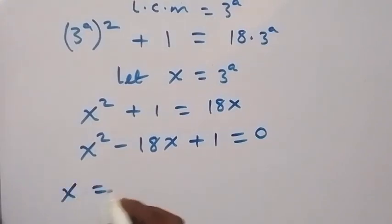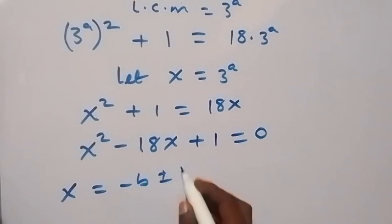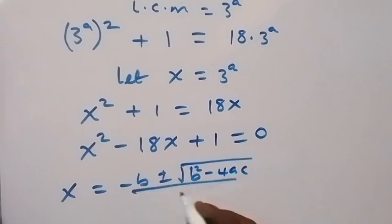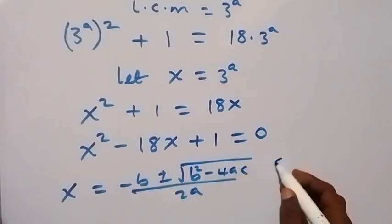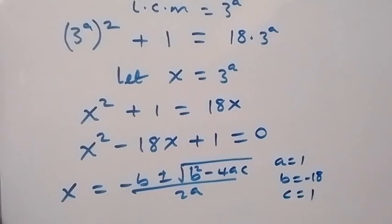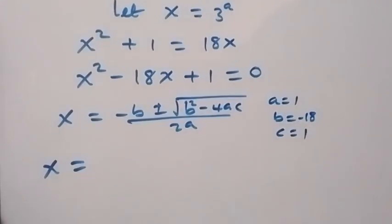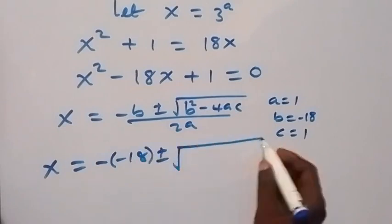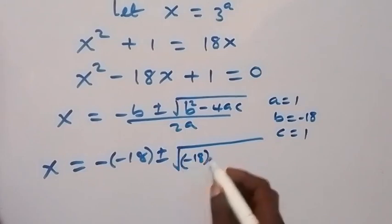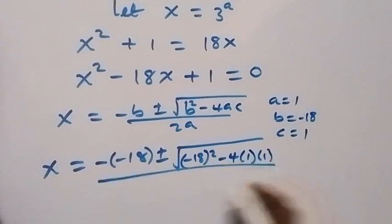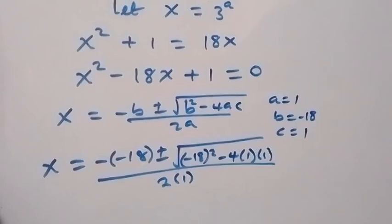We can use the quadratic formula to solve this: x equals negative b plus or minus square root of b squared minus 4ac, all over 2a. In this case, a is 1, b is negative 18, and c is also 1. So x equals negative negative 18, plus or minus square root of negative 18 squared minus 4 times 1 times 1, over 2 times 1.